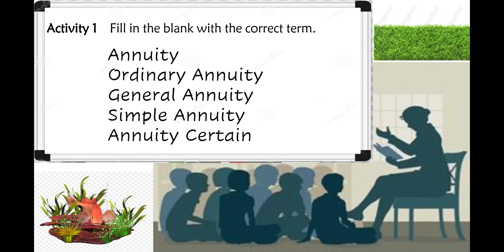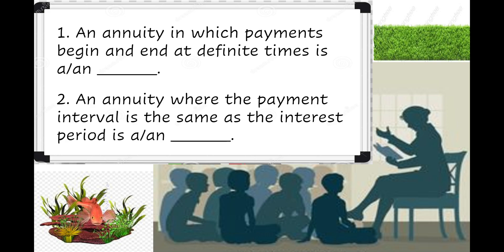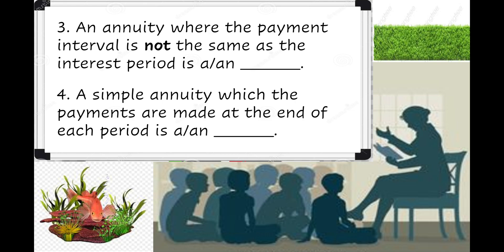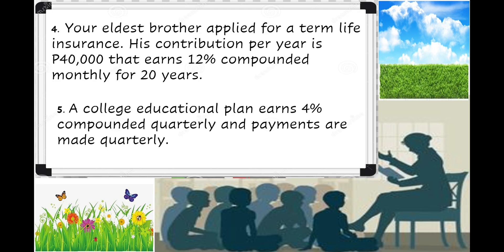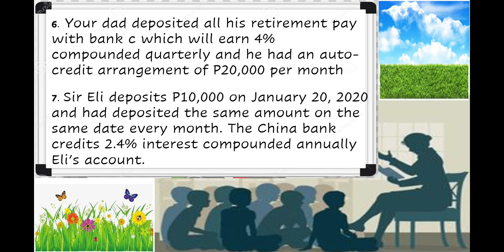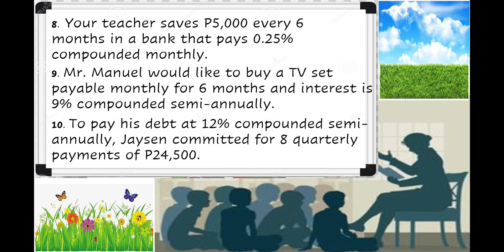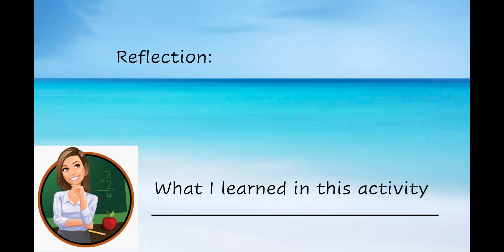For your activity, you are going to fill in the blank with the correct term — whether it is an annuity, ordinary annuity, general annuity, simple annuity, annuity-due, or annuity certain — for numbers 1 through 5. For Activity 2, identify whether the given illustrates simple annuity or general annuity for numbers 1 through 10. For your reflection, write what you learned in this activity on a clean sheet of paper.